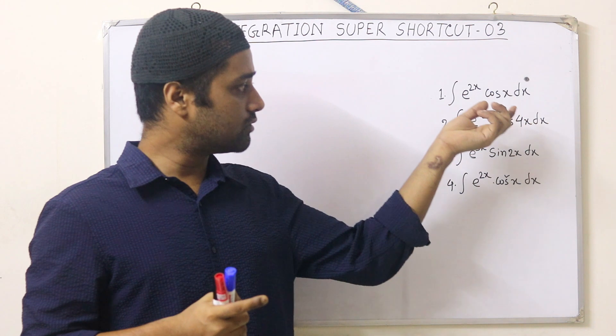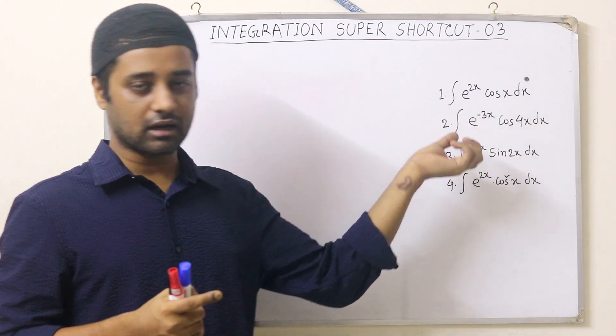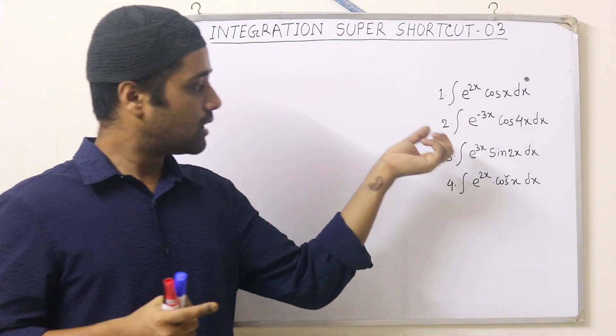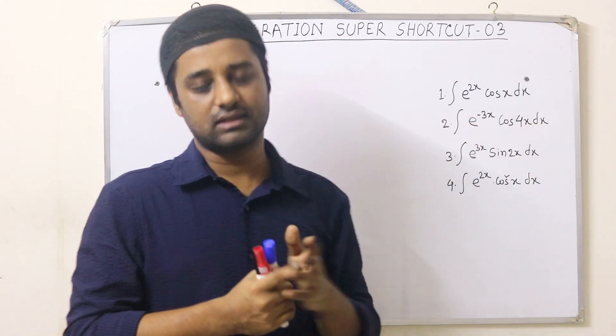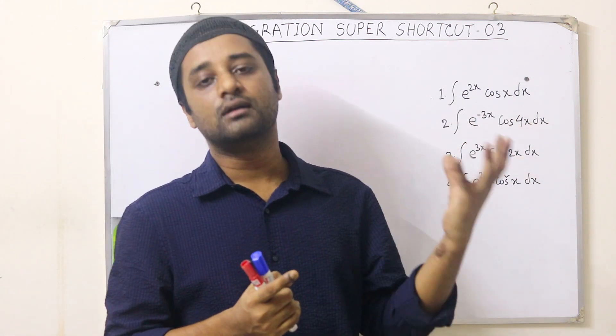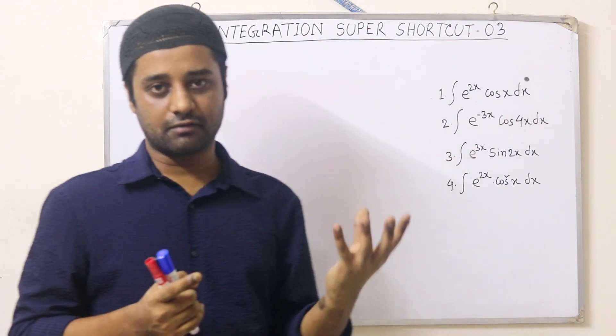We have 2x, sin of x, or cos of x. This is the exponential function, and this is the trigonometric function.